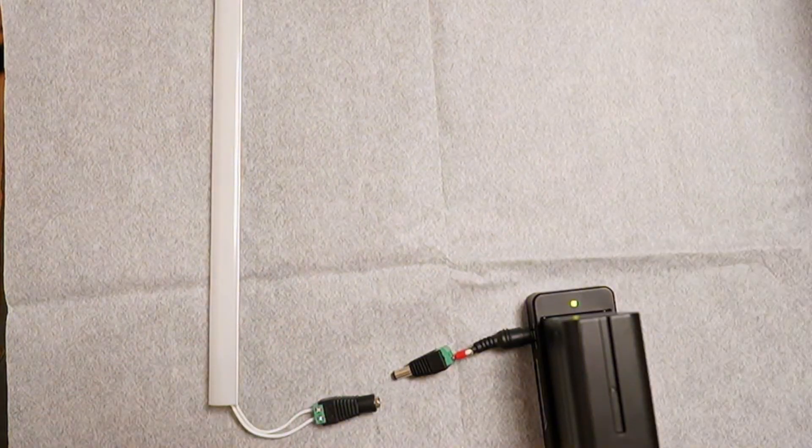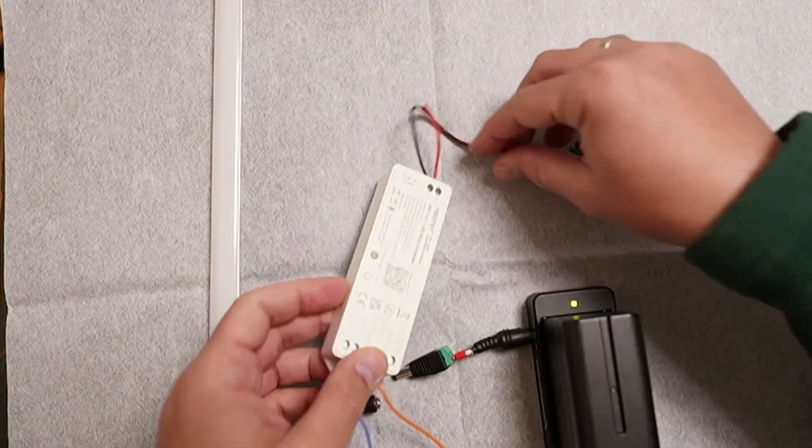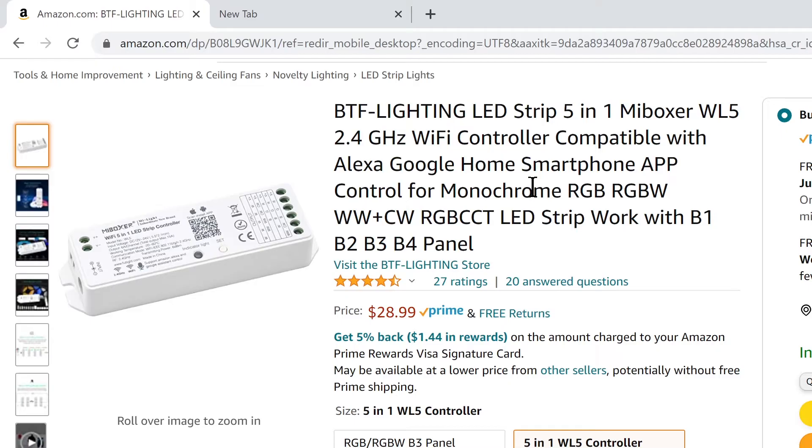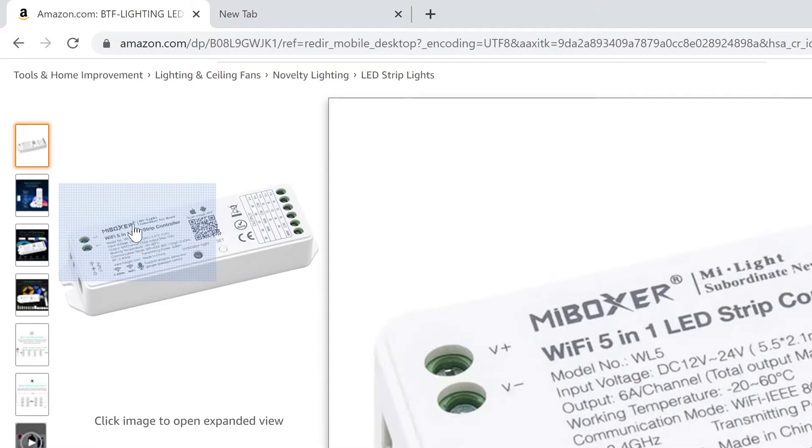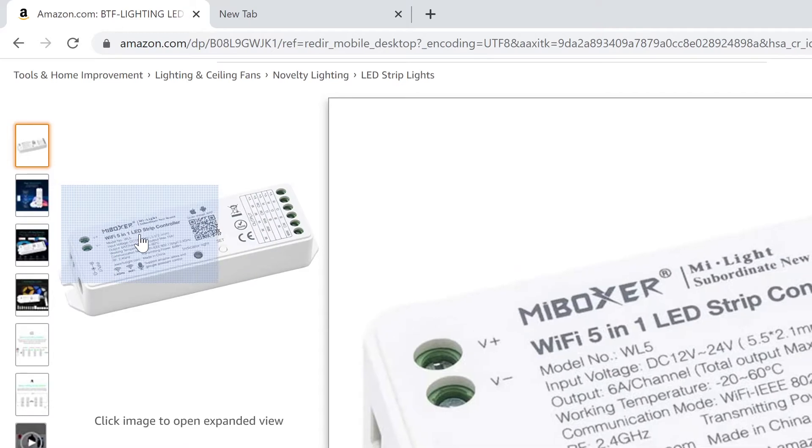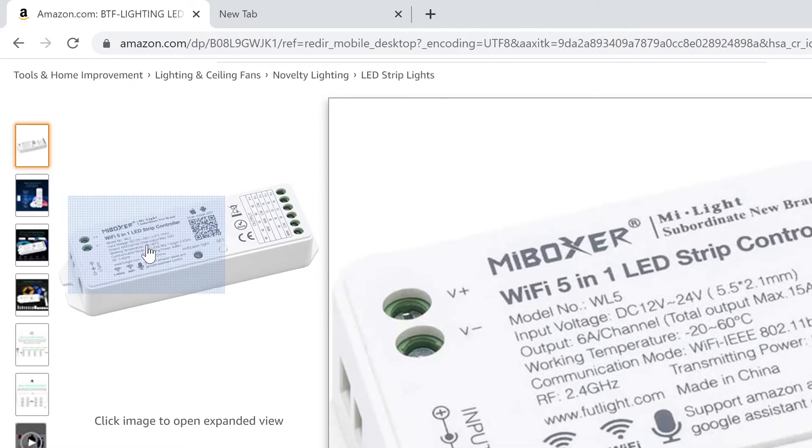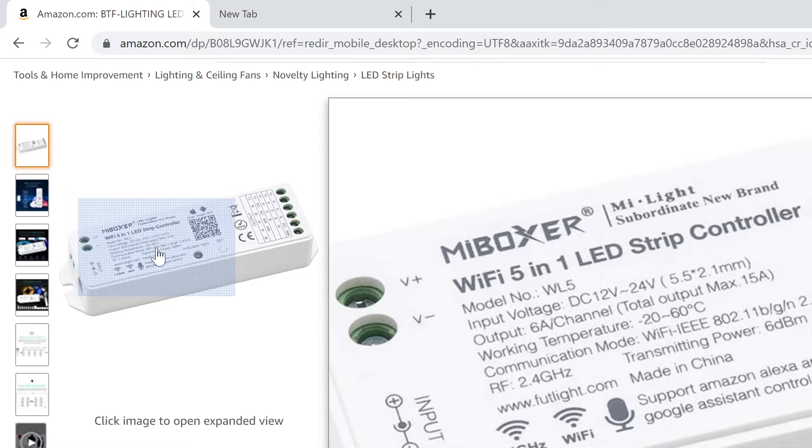Now today I want to cover this device, so this is a MiBoxer, or sold by BTF lighting also. But if you look at the product you can see it's MiBoxer. It has WiFi so it connects to Alexa and all that, plus it has its own app called MiBoxer which you can use to control it.